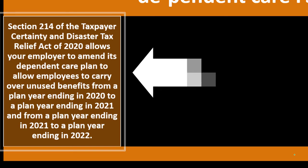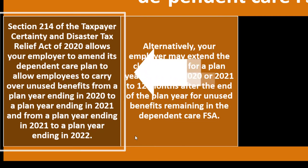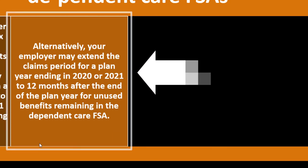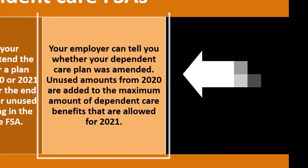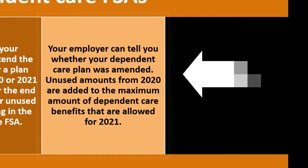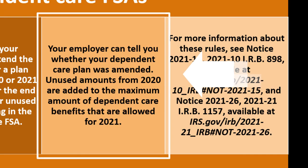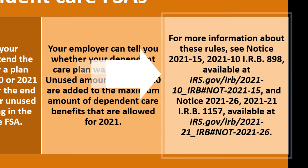Line 13: if you had an employer-provided dependent care plan, your employer may have permitted you to carry forward any unused amount from 2020 to use in 2021. Enter on line 13 the amount you carried forward. Section 214 of the Taxpayer Certainty and Disaster Tax Relief Act of 2020 allows your employer to amend its dependent care plan to allow employees to carry over unused benefits from a plan year ending in 2020 to a plan year ending in 2021, or from 2021 to 2022. Your employer can tell you whether your dependent care plan was amended.